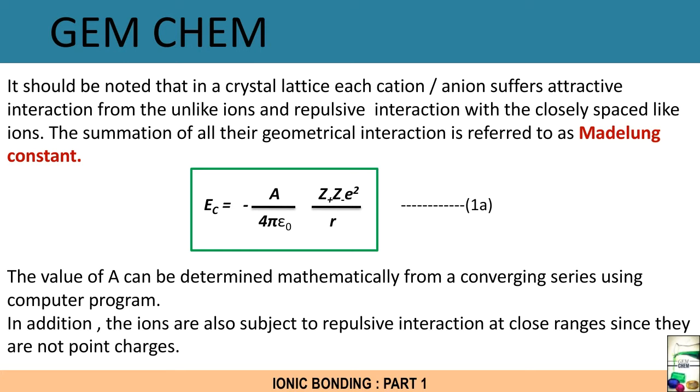So here we can get an idea of what is Madelung constant. The Madelung constant is taken as A. So the previous formula of electrostatic attraction followed by a term of A, so Ec that is coulombic potential is given by -A/(4πε₀) × (Z+Z-e²)/r. Now the value of A can be determined mathematically from a converging series using computer program. What do we mean by converging series will be discussed in details in the next video.